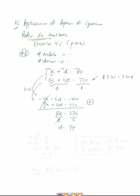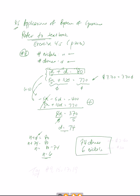As with any system of equations with two unknowns, you need solutions for each. So far we've only found d. To find n, I'll use the simpler equation: n plus d equals 80. Substituting d equals 74 gives n plus 74 equals 80, so n equals 6. Make sure you answer the question — there are 74 dimes and 6 nickels.